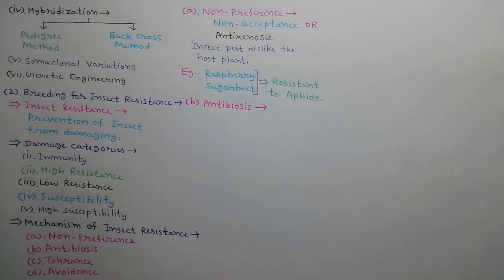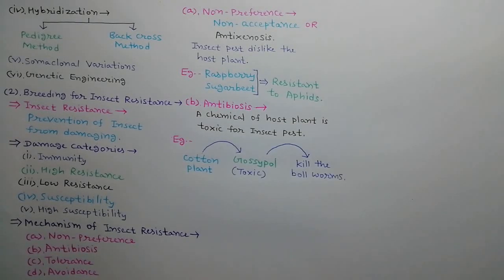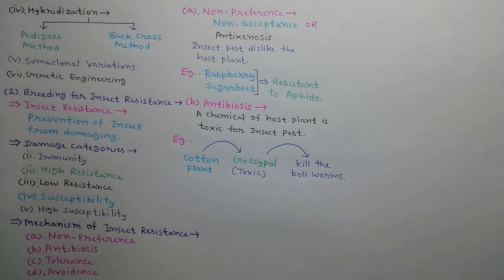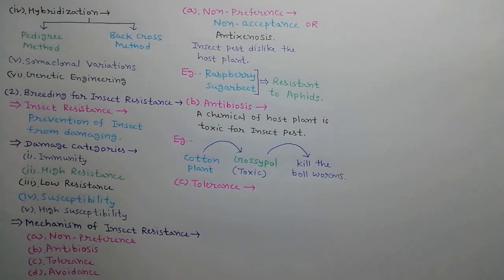Second mechanism is antibiosis. In this mechanism, host plant contains a toxic substance. When insect pests feed on this host plant, toxic substance kills the insect pest by adverse effect on growth, development, and reproduction. For example, cotton plant contains a toxic substance known as gossypol which kills the boll worms.